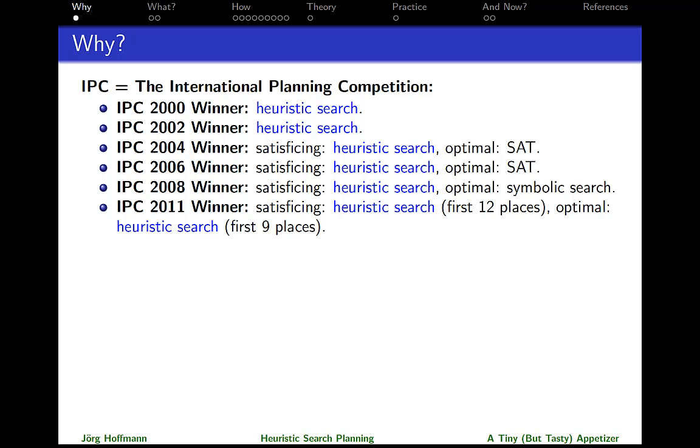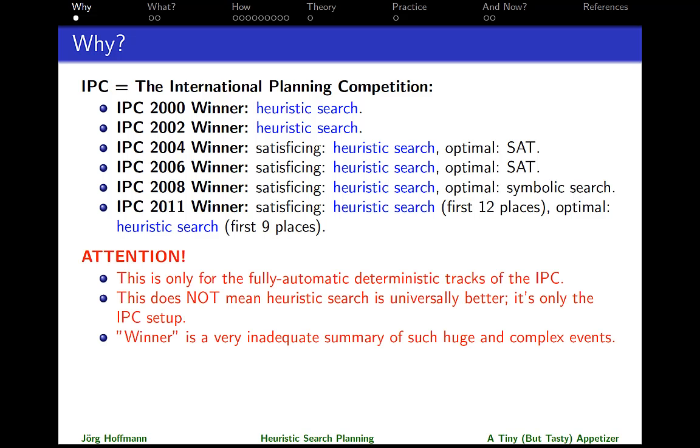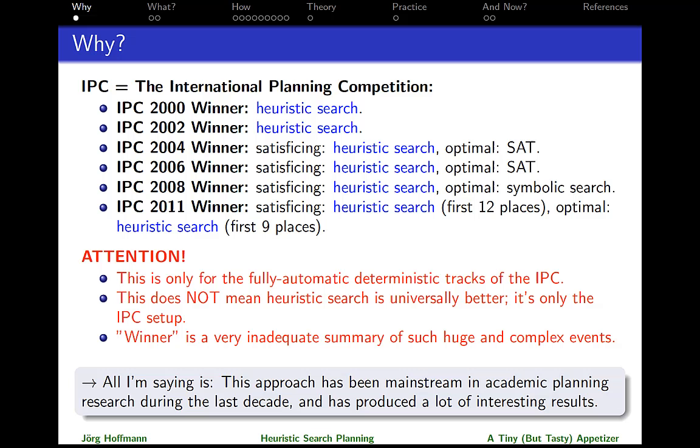Now, that might seem very impressive, and it is impressive. However, you should not take this too seriously. First, it's only one part of the IPC, namely the fully automatic deterministic part. There are other parts as well, although this one is the biggest one. Second, winning the competition doesn't mean you win in real life. You're just the best planner in one particular setup and according to one particular winning criterion. If you have an actual application, the winner might be different. Finally, saying the word 'winner' already is not really adequate, because these are hugely complex events, very complicated experiments, lots of data, and giving you just a single bit 'somebody won' is not a very adequate summary. So really, all I'm saying here is that these results should give us sufficient motivation to consider this approach for the 12 minutes of this lecture.